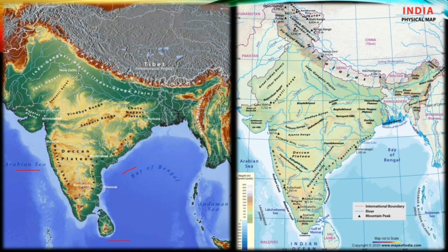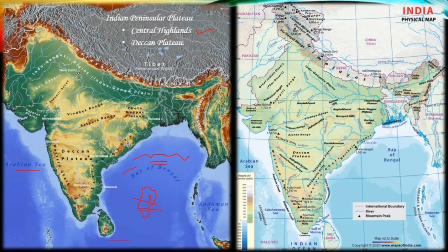As we discussed in a previous video, how Continental Drifting formed different landmasses — similarly, the Indian Plate's break from Gondwana Land and subsequent drifting led to the formation of this oldest landmass, which we call the Indian Peninsular Plateau. Here, shallow valleys and rounded hills are found, and the general elevation is 600 to 900 meters. The Indian Peninsular Plateau can be broadly divided into two divisions: Central Highlands and Deccan Plateau.